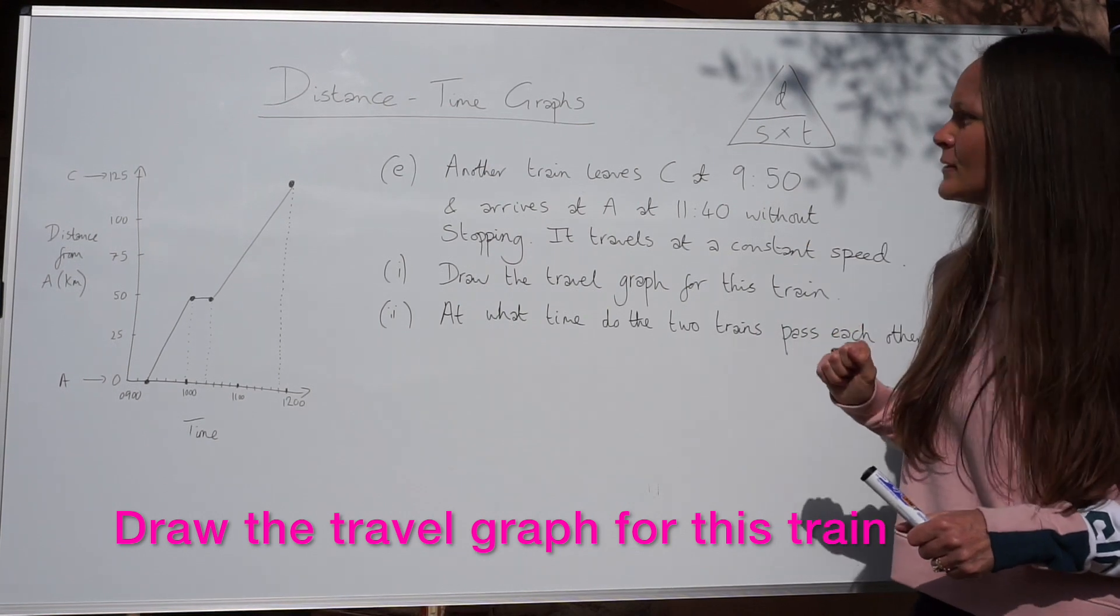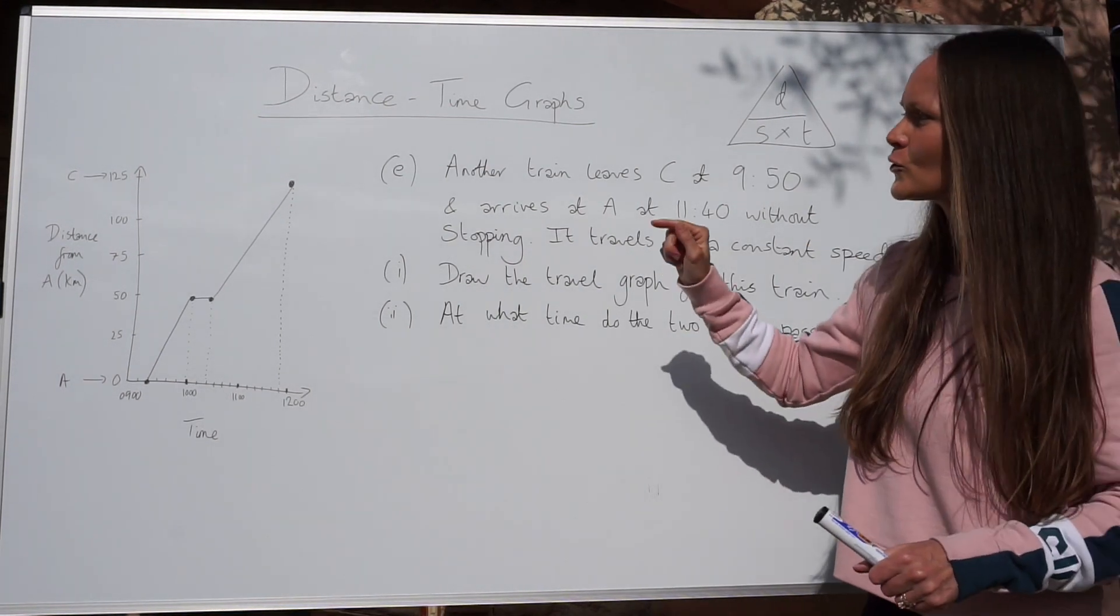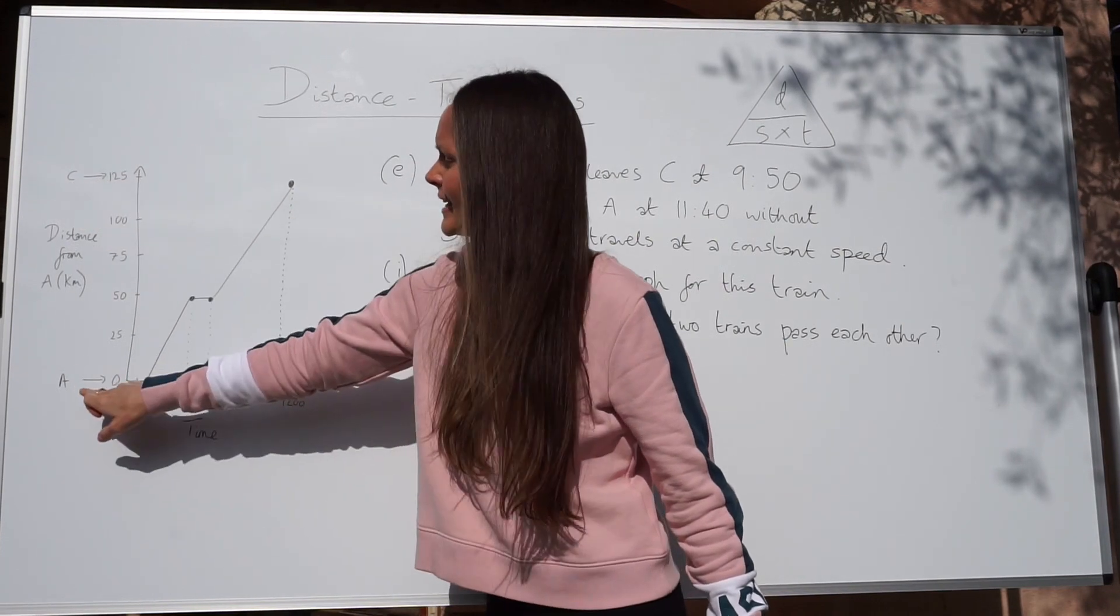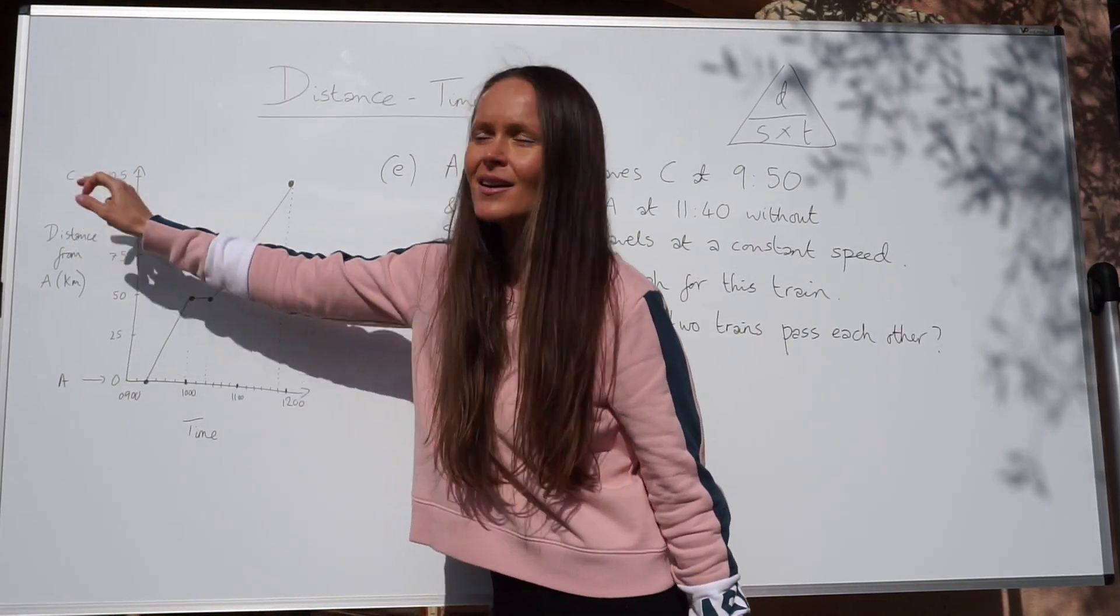So because the train leaves at C, you need to start by drawing the graph up here. It doesn't leave from A, it leaves from C.